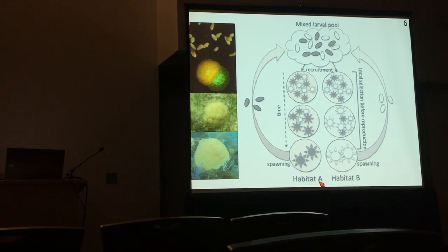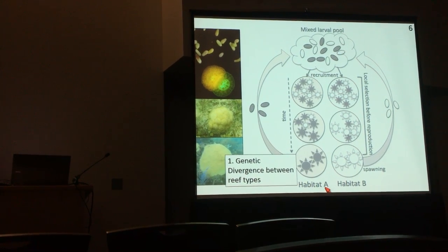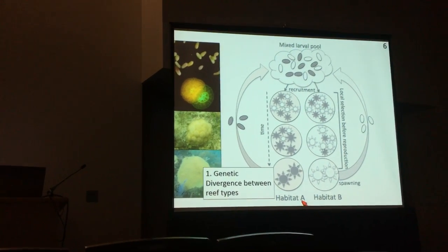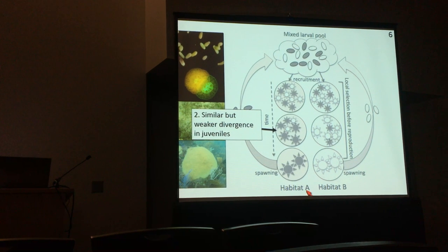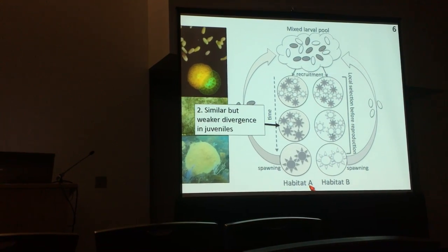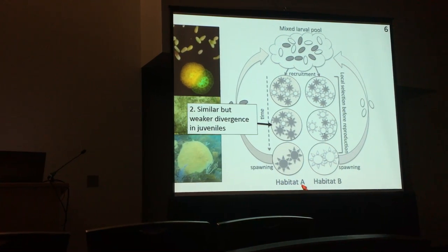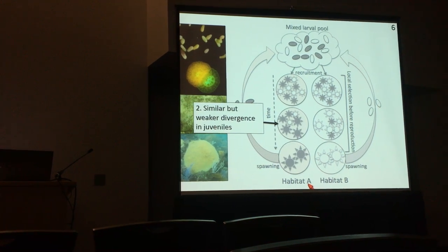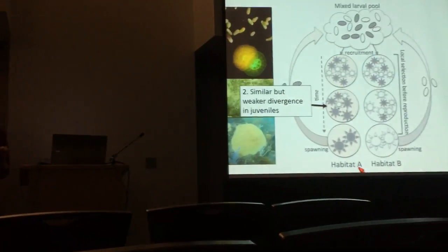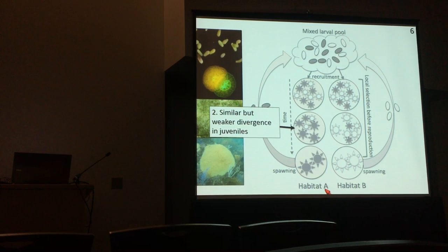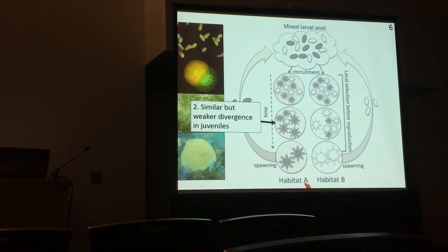There are several predictions from this scheme. First, that genetic divergence exists between spatially very close but environmentally distinct habitats, not entirely swamped by gene flow. Second, juveniles should show similar but weaker divergence than adults, since selection has had less time to act on that cohort. Third, this genetic divergence doesn't have to span the entire genome — we expect no structure at most loci, and divergence only at those loci under selection in each habitat.